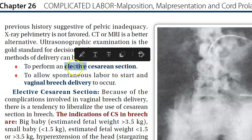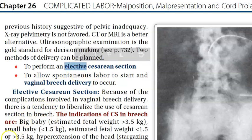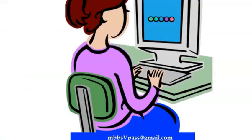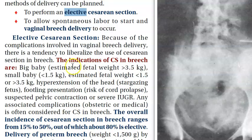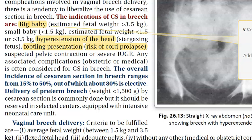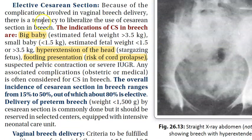You can plan an elective cesarean section — that is, a non-emergency planned cesarean. Indications for elective cesarean include a large baby, hyperextension of the fetal head, or footling presentation because of the risk of cord prolapse, or any other complication.